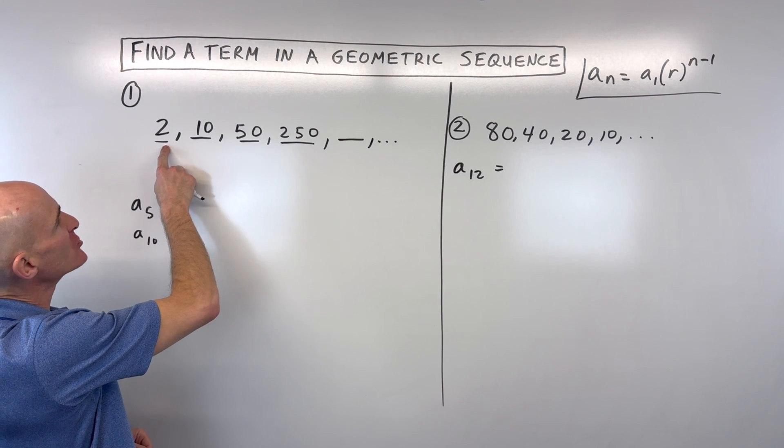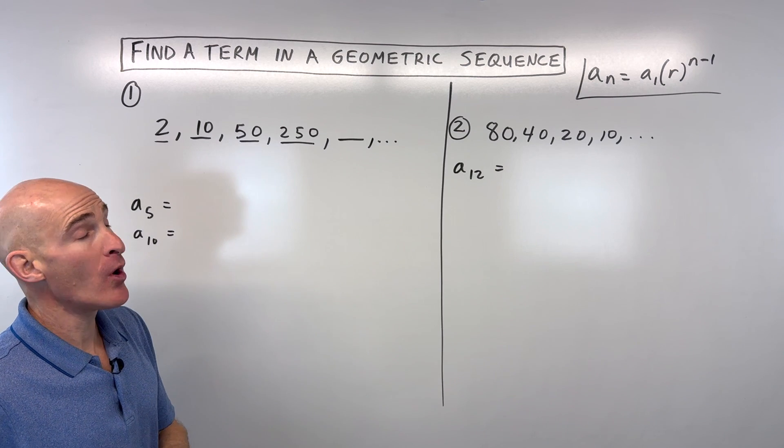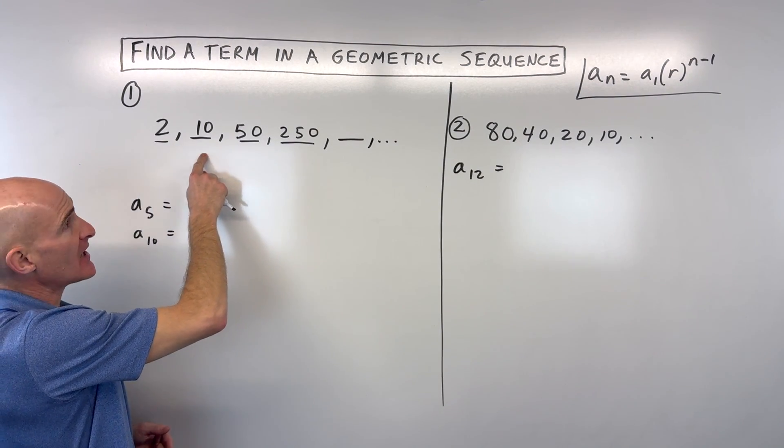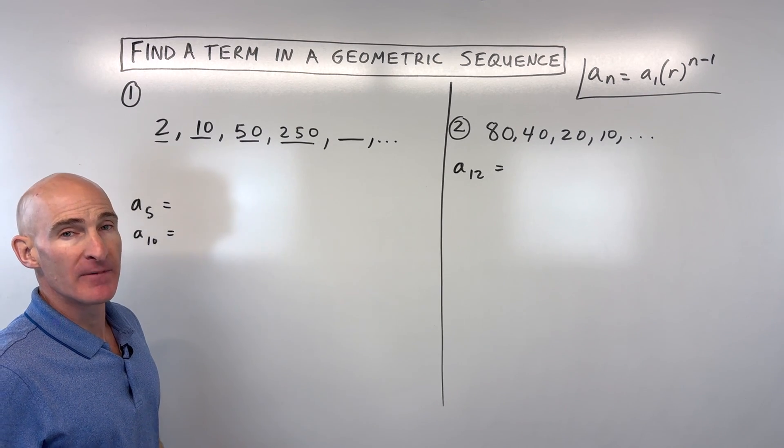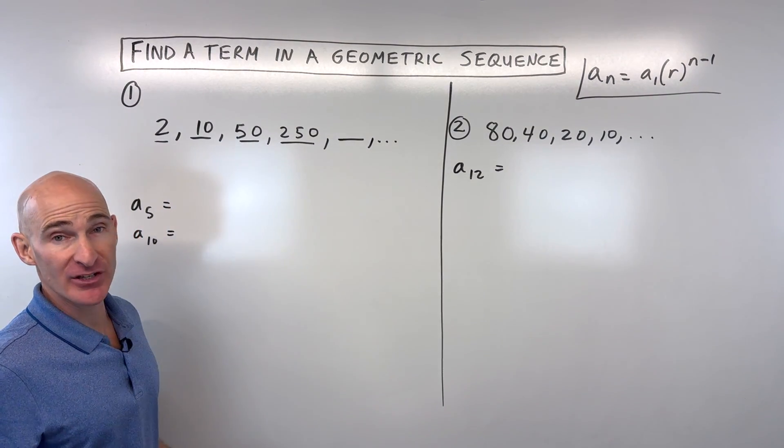Well, we've got 2, 10, 50, 250, dot dot dot. It keeps going. So what's the pattern here? What are we doing to get from 2 to 10 or 10 to 50? What are we doing? Well, you can notice here that we're multiplying by 5 each time.